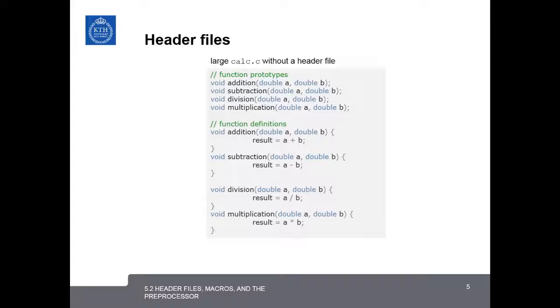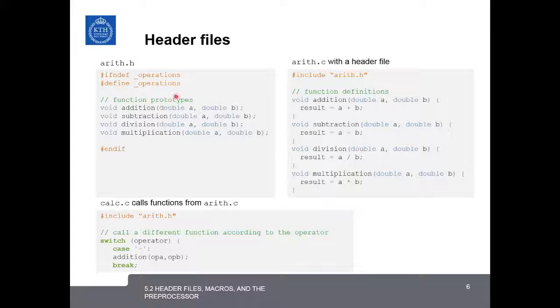Looking back to our calculator example from the previous lesson, let's look and see how the very large calc.c without a header file, where we had the entire code in one file, looked to begin with. We had various function definitions for addition, subtraction, division, and multiplication, and we had the prototypes at the top of the file. Afterwards, when we broke the file into multiple files, we took out the arithmetic operations and put them into an arithmetic.c file, where now this arithmetic.c file has the function definitions, and it also has an include of Arith.h, which included the function prototypes. The calc.c is able to use the addition operation as well as the others by just simply including hash include Arith.h.